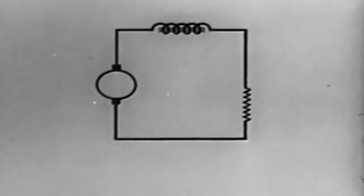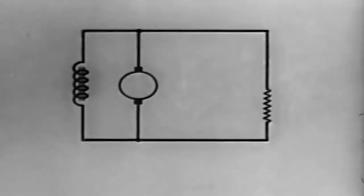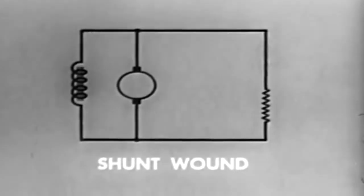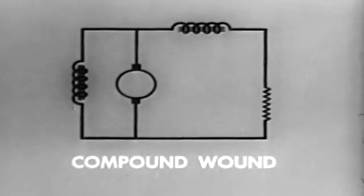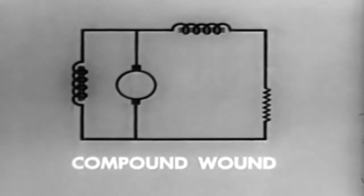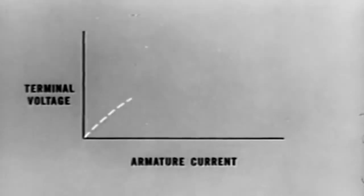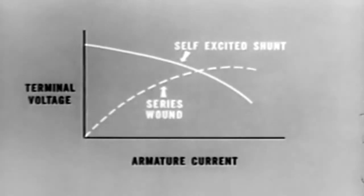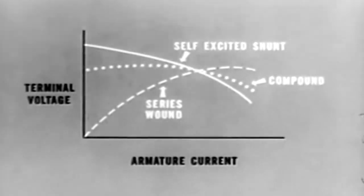Generator field windings are constructed in three ways: series wound, where the field windings and the armature are in series; shunt wound, in which the field winding is in parallel with the armature and the load; and compound wound, in which the best features of both the shunt and series wound generators are combined. Voltage regulation in the series wound generator is poor. In the shunt wound generator, voltage regulation is fairly good, but current regulation is poor. Compound wound generators provide stable voltage under changing loads — this output is normally most desirable.